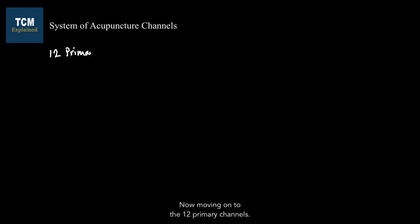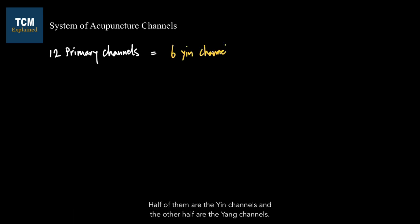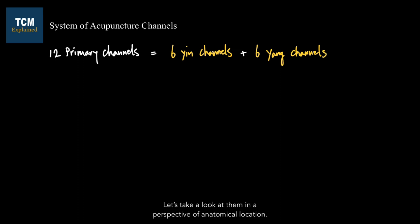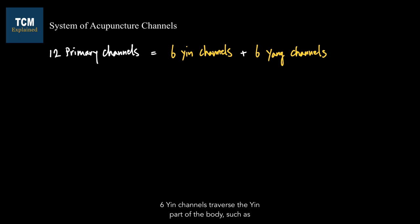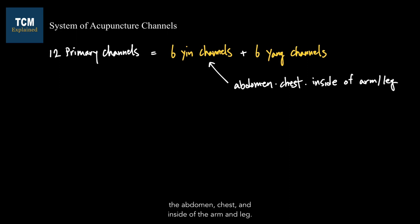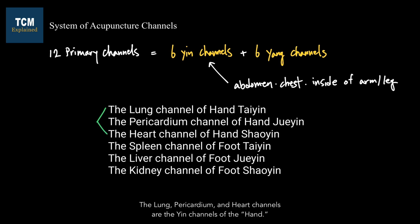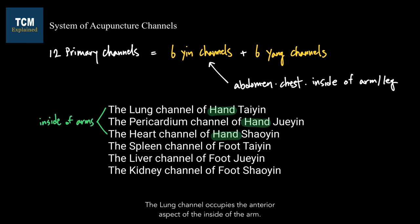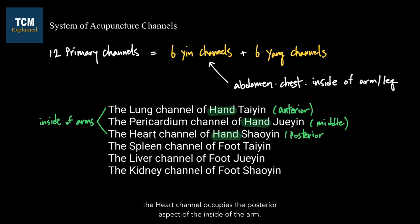Now moving on to the 12 primary channels. Half of them are the yin channels and the other half are the yang channels. All 12 primary channels run up and down the body bilaterally and symmetrically. Six yin channels traverse the yin part of the body such as the abdomen, chest, and inside of the arm and leg. The lung, pericardium, and heart channels are the yin channels of the hand. Since they are all yin channels, they are located on the inside of the arms. The lung channel occupies the anterior aspect, the pericardium channel the middle aspect, and the heart channel the posterior aspect of the inside of the arm.